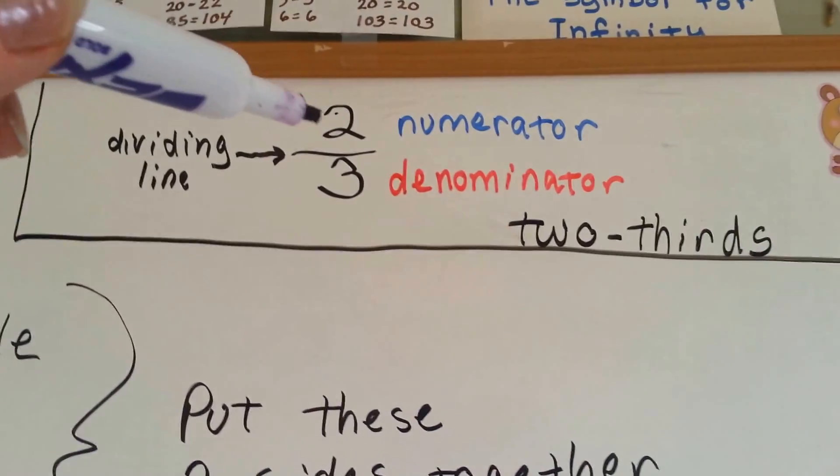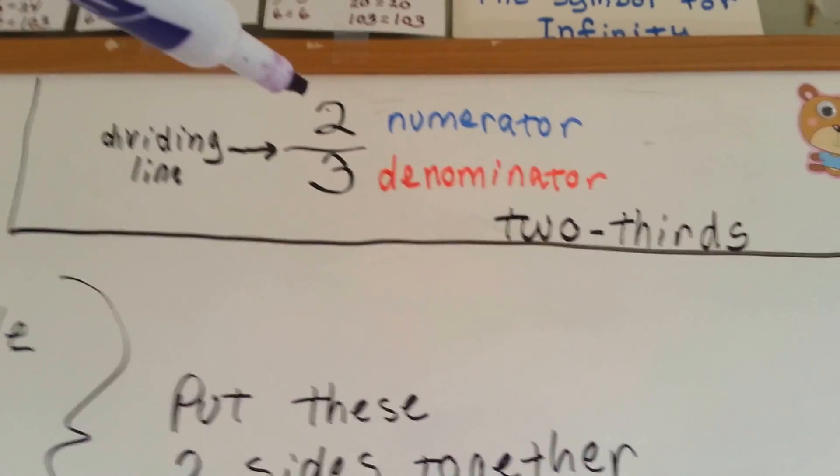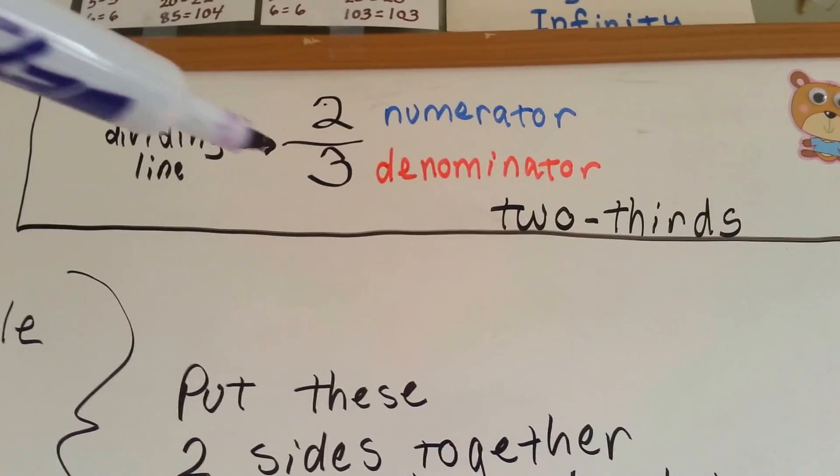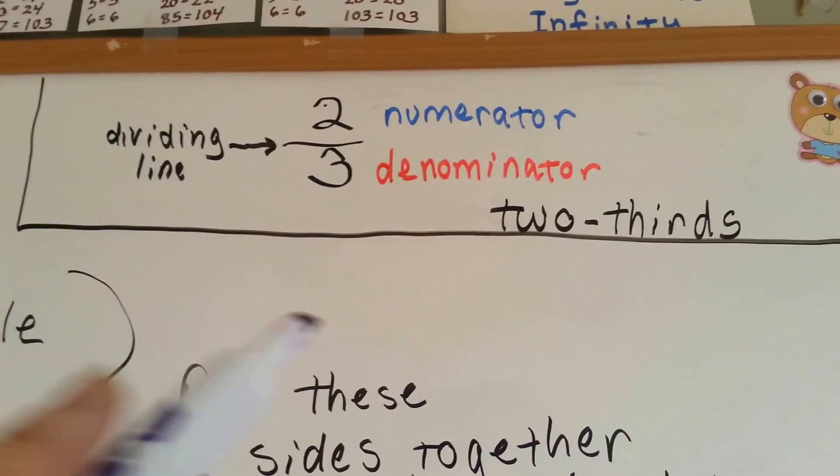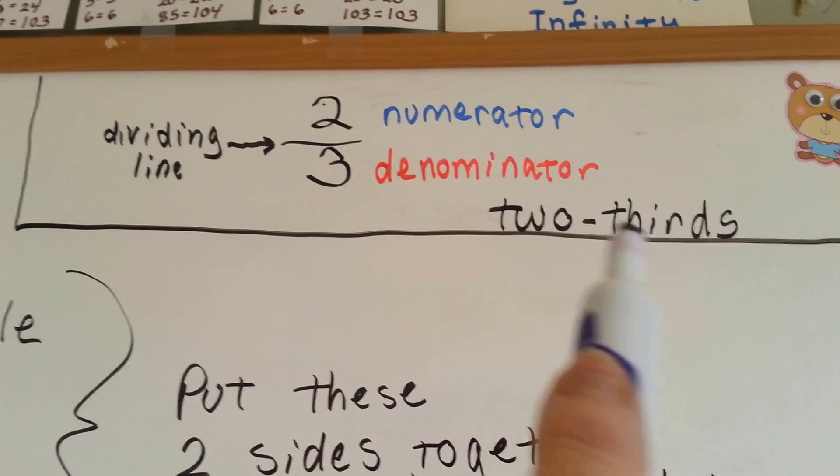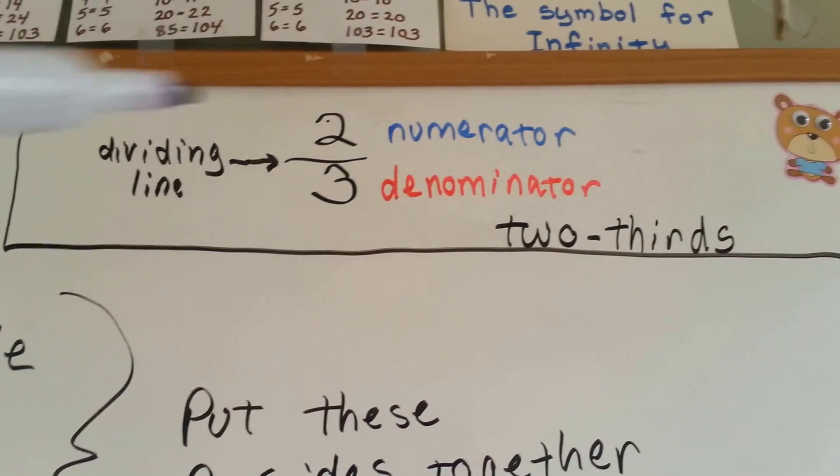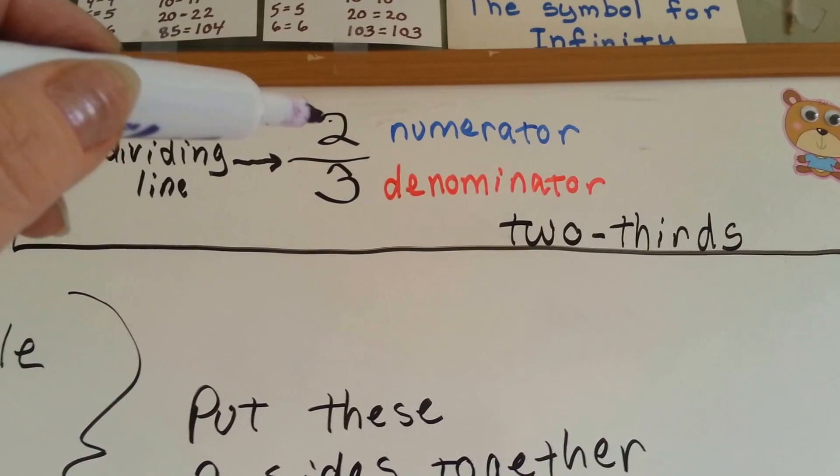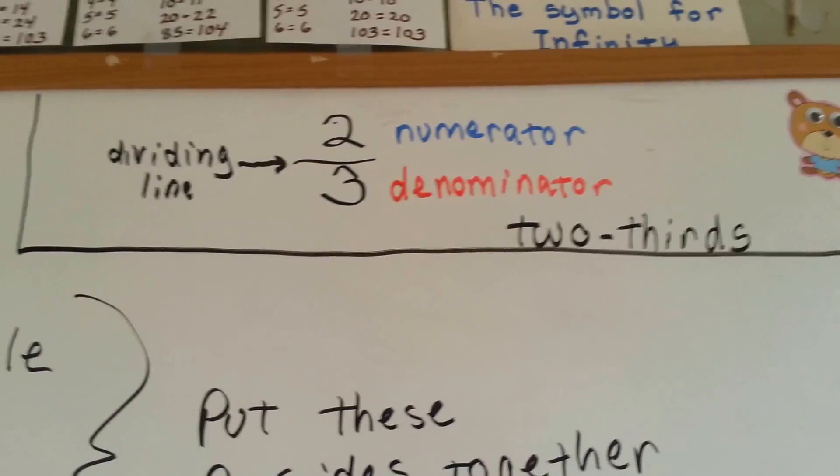Here's a fraction, this is two-thirds. The two is the numerator and the three is the denominator. The line right here is called the dividing line. It's written as two with a hyphen, thirds. That means if something was split into three parts, that you took two of them. You took two out of the three.